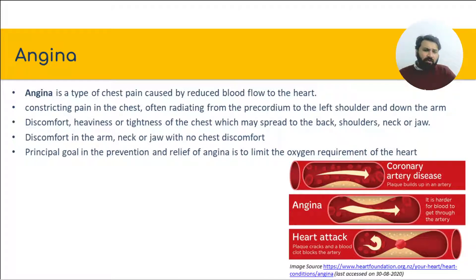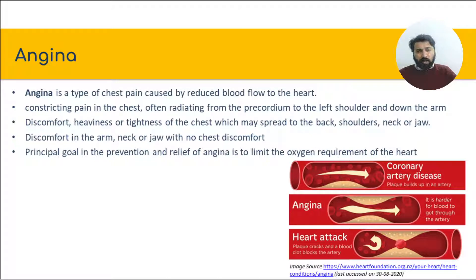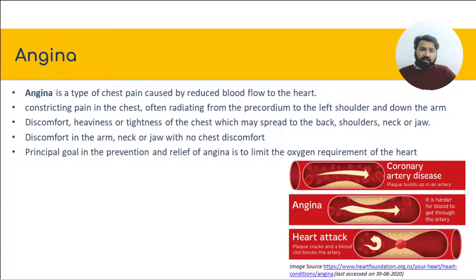Angina is the principal symptom of ischemic heart disease, characterized by severe constricting pain in the chest which often radiates from the precordium to the left shoulder and down the arm. The principal goal in the prevention and relief of angina is to limit the oxygen requirement of the heart so that the amount of blood supplied by the stenosed artery is adequate.